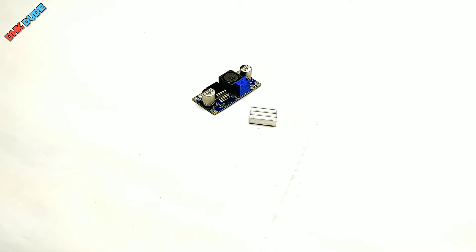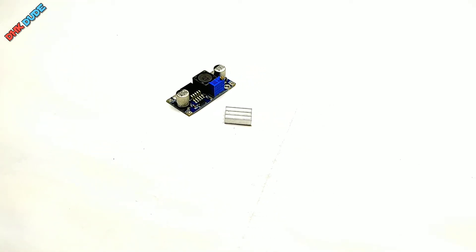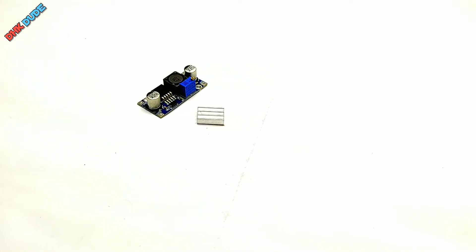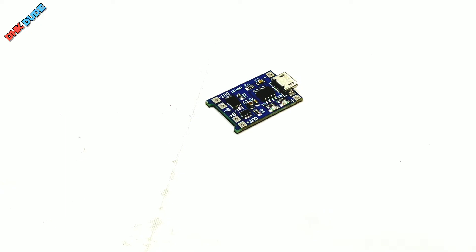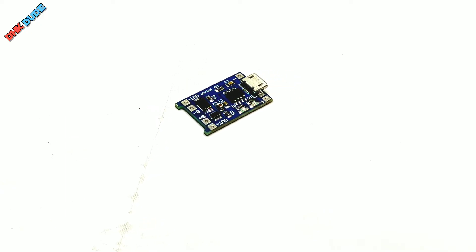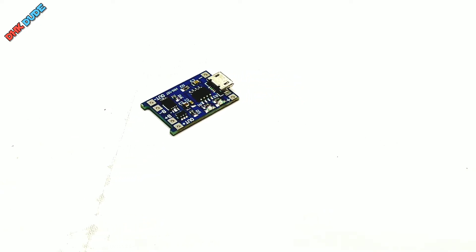To step up the battery voltage we are using cheap and reliable XL6009 DC to DC converter. We are also using low cost TP4056 battery charging module to charge our battery. It protects battery from overcharge and discharge. Get some M3 screws to fit top UPS cover to the base, 10-15mm length will be fine.